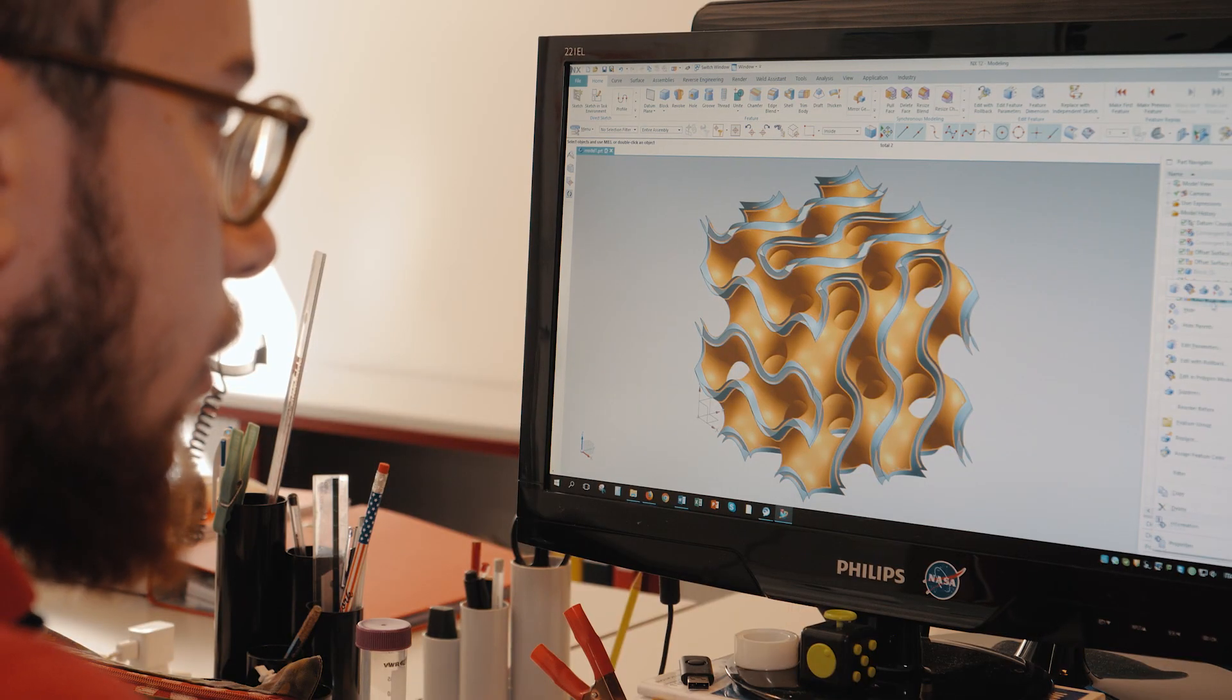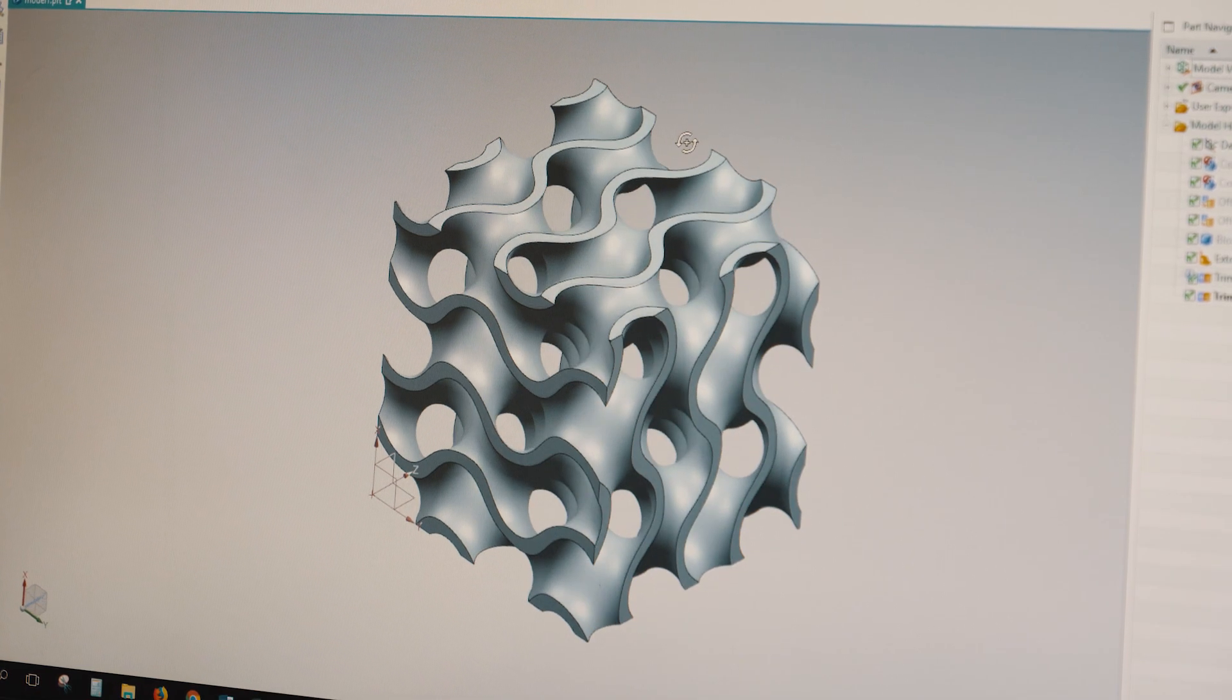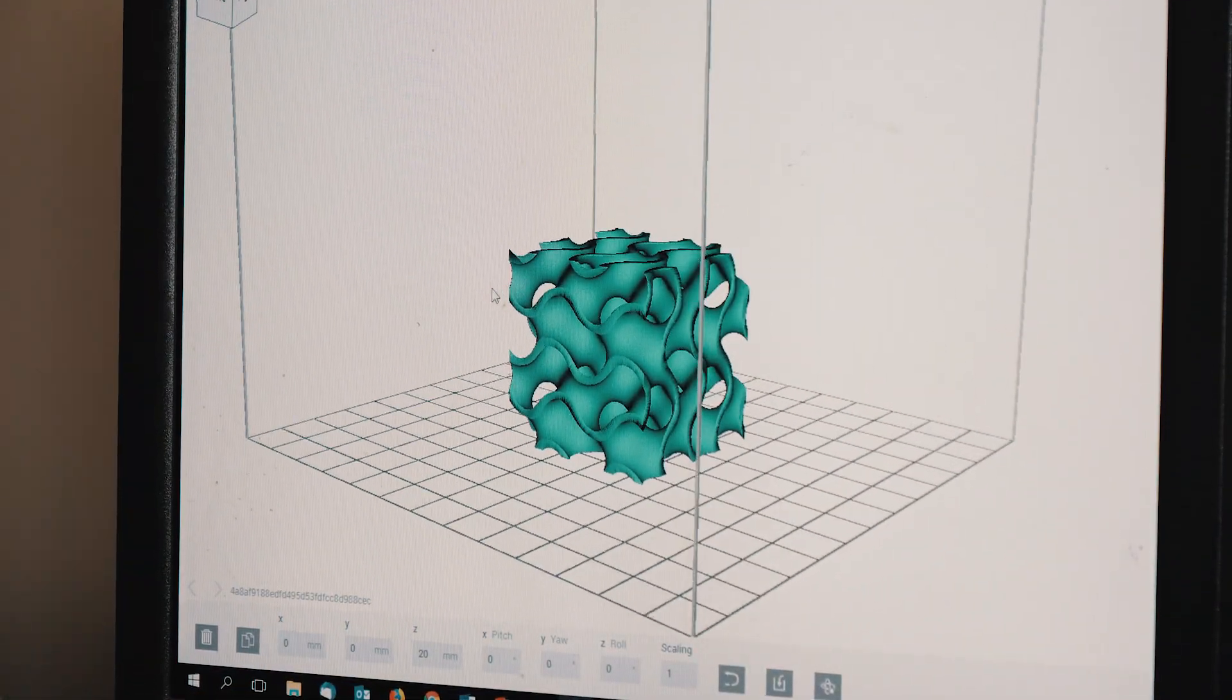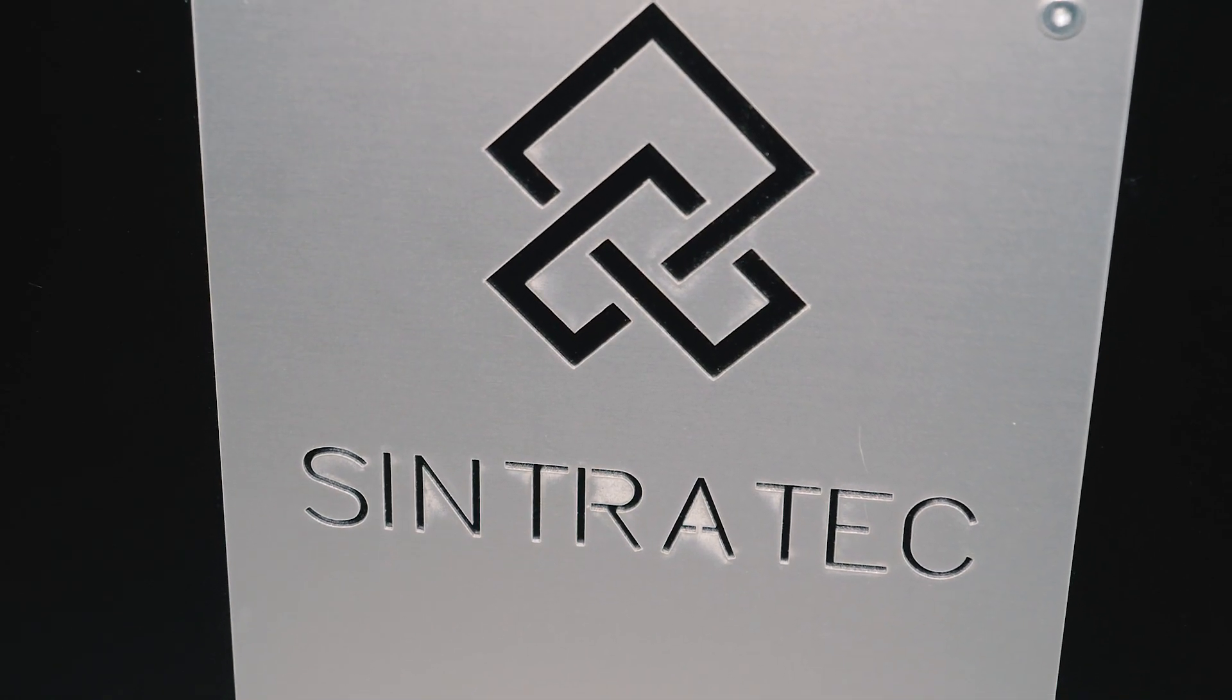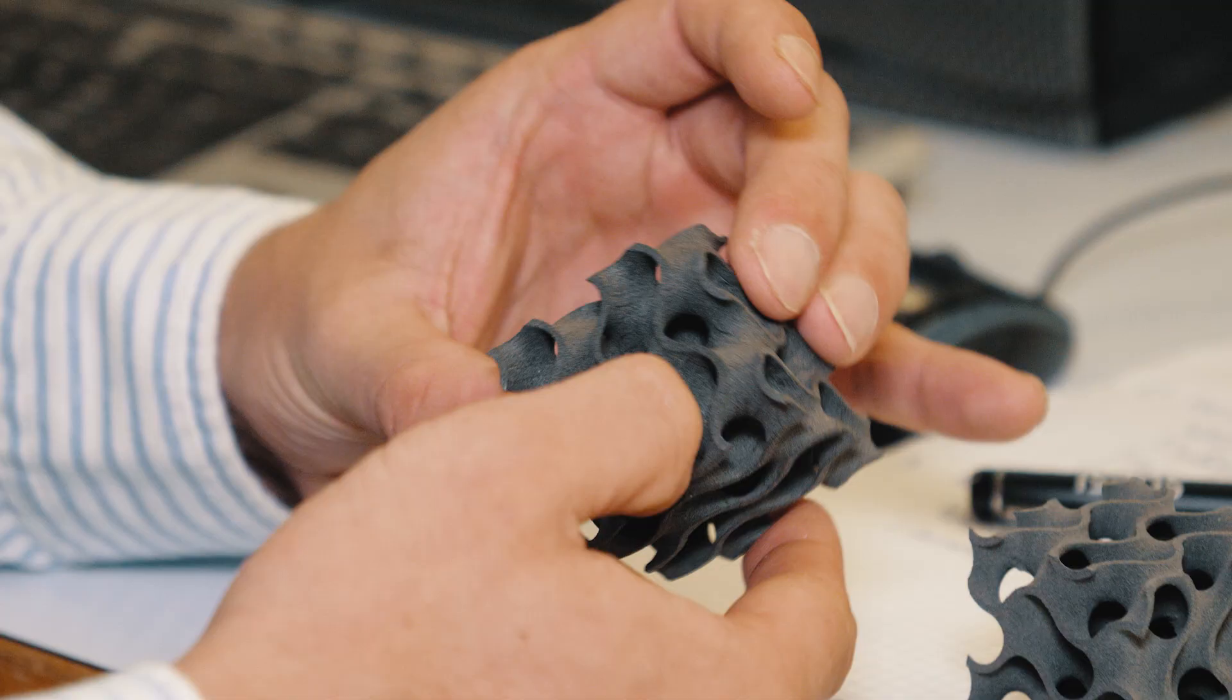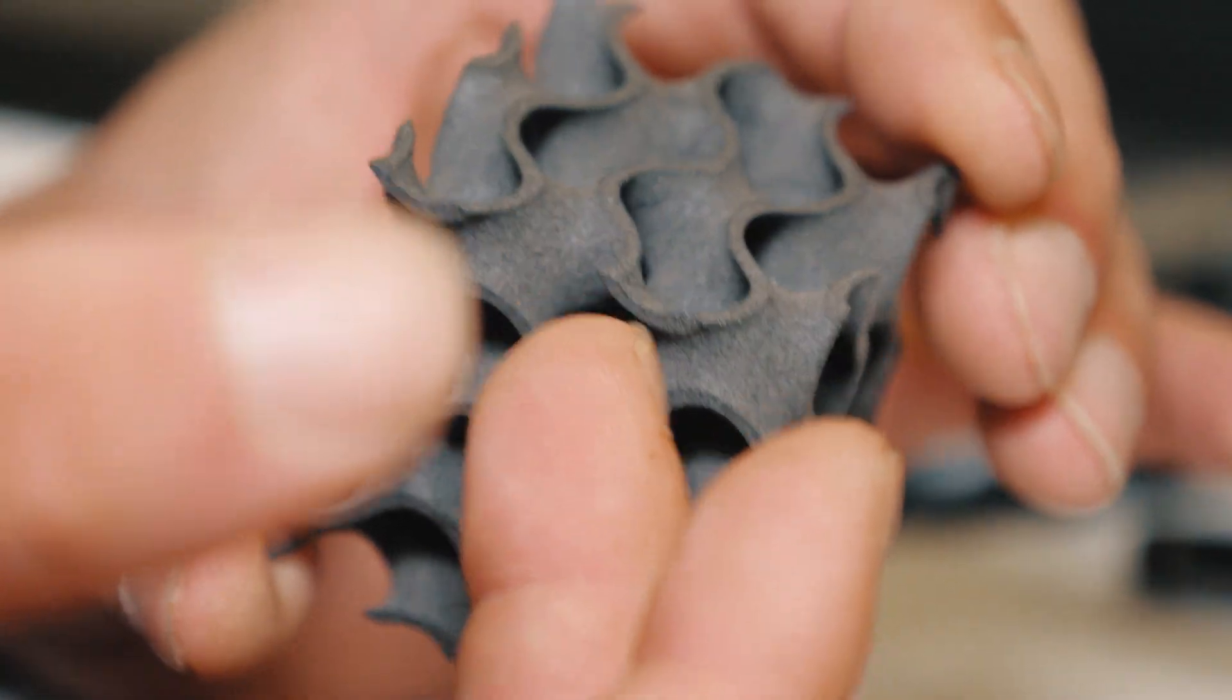Up to now we were using just SLA technique but with that it was not possible to achieve porous objects. This is why we are now investigating the SLS technique. We bought this Sintratech kit which allows us to produce porous components. For example these porous structures are called gyroid.